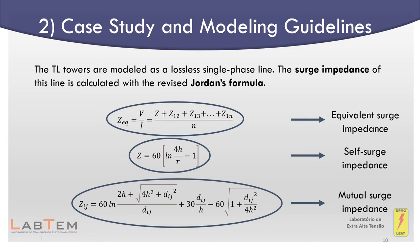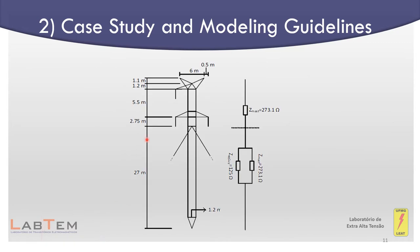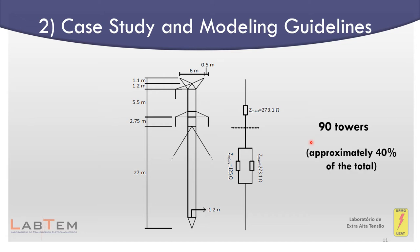On the left is represented the Gaia tower geometry, with the ATP tower model on the right. Each Gaia wire was represented as a single vertical conductor whose surge impedance was calculated using the expression shown previously. The equivalent impedance of the four Gaia wires was determined by dividing that of a single wire by four. The equivalent impedance of the Gaia wires is placed in parallel with the mast surge impedance at their connection point, as indicated in the tower model. 90 of the 220 towers are Gaia structures.